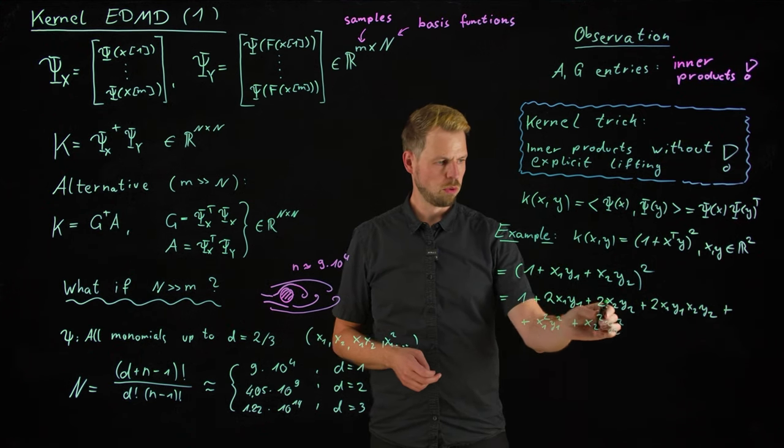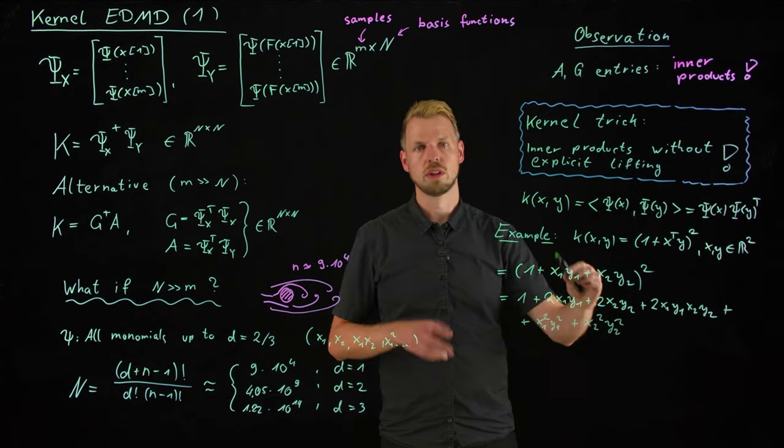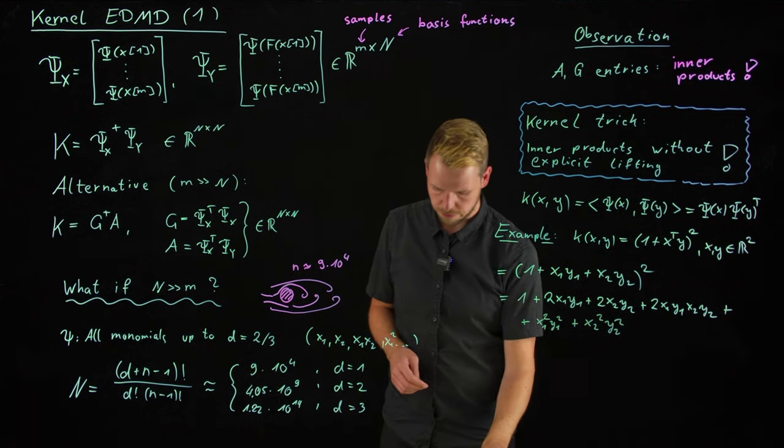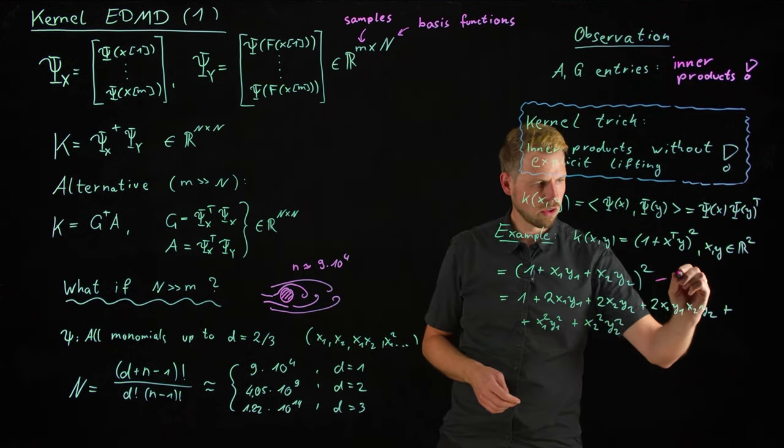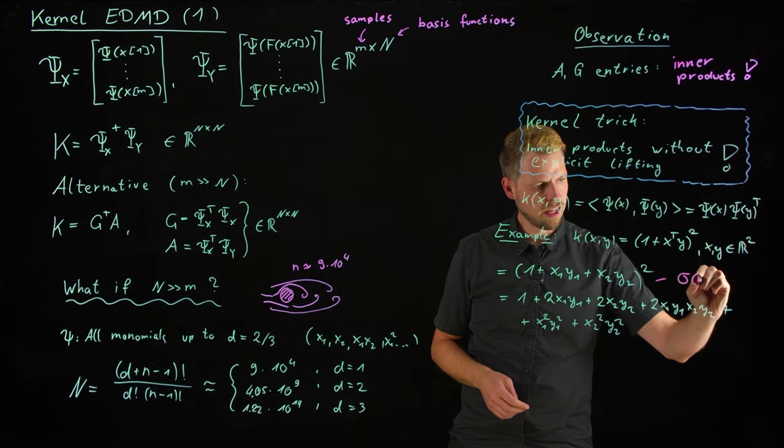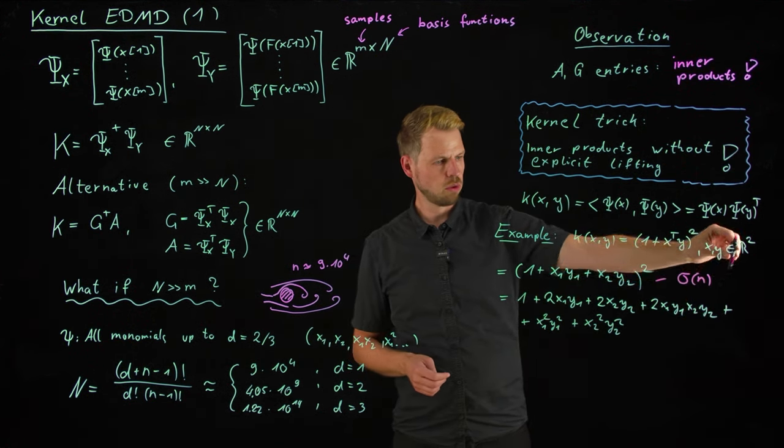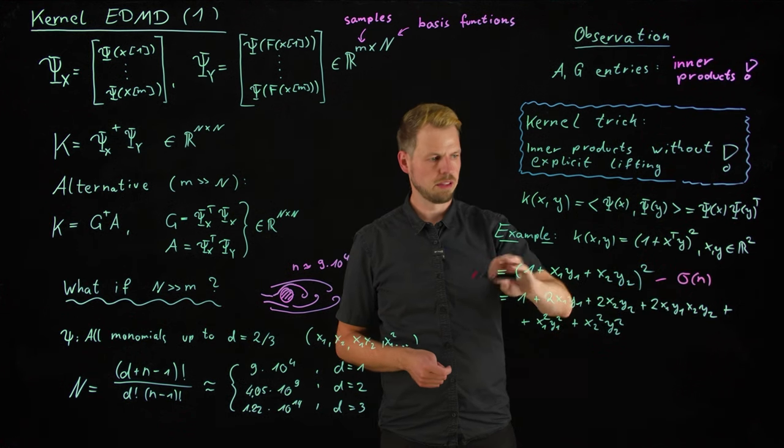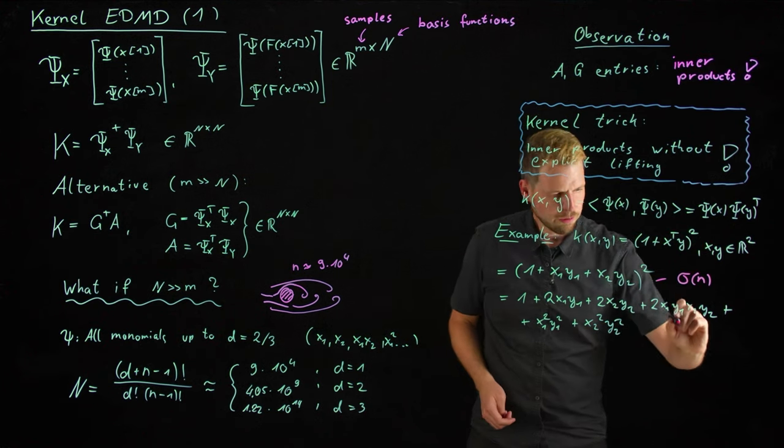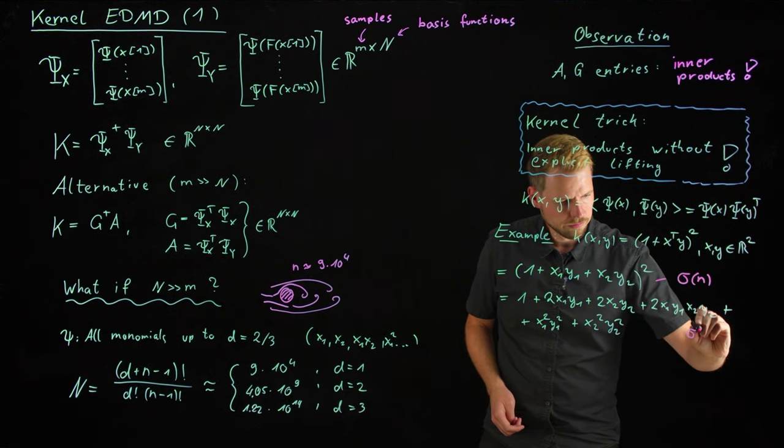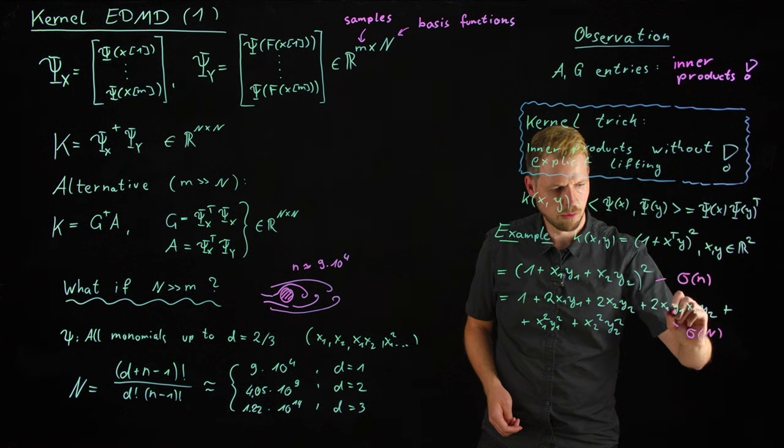So you see, 1, 2, 3, 4, 5, 6 terms, but these are 2, so 9 terms in total, as expected. And now you already see, what we have done is this one has, on the order of n operations, right? If it's a two-dimensional vector, n is 2, I have two inner products plus some constant, and taking the square, whereas here, I have on the order of n operations.